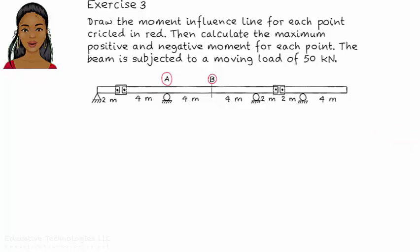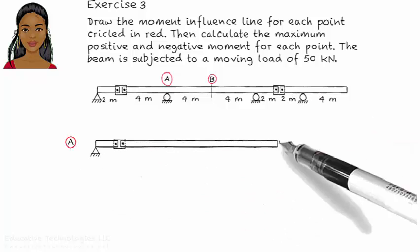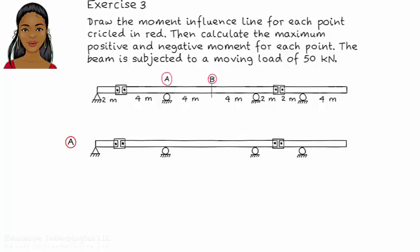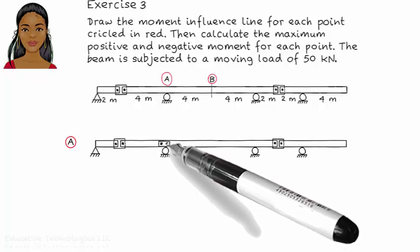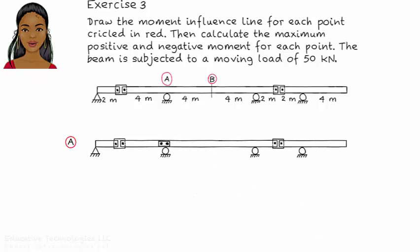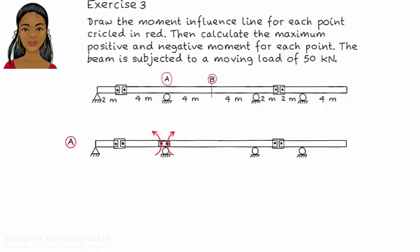Drawing the influence line for moment at A. Place a hinge at A and apply a positive moment to the hinge. This causes the beam to deform like this.